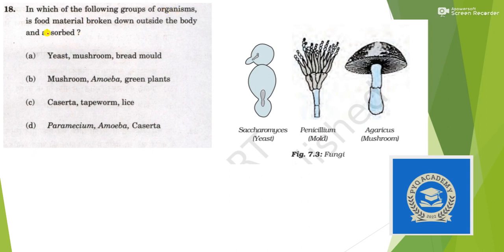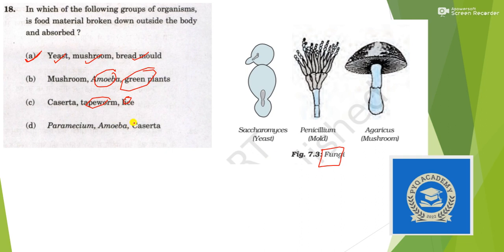Next: in which one of the following groups of organisms is food material broken down outside the body? It is broken down outside the body in saprotrophic organisms, and fungi is an example. Looking at the options for fungi combinations: yeast is a fungus, mushroom and bread mould — yes, this is the option with the correct combination. Amoeba is wrong, green plants are wrong, and the worms option is wrong. So this is the only correct option.